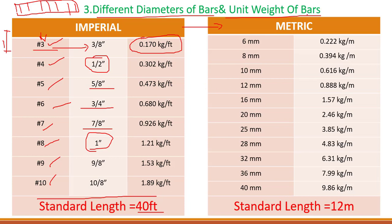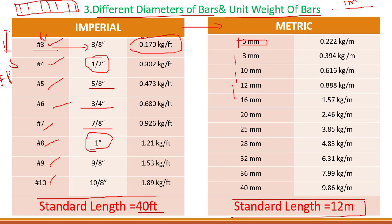Now let's look at the metric system in millimeters. We have bars of 6 mm, 8 mm, 10 mm, 12 mm, 16, 20, 25, 28, 32, 36, and 40 mm. For a 1-meter bar, the unit weights are: 6 mm = 0.22 kg, 8 mm = 0.394 kg, 10 mm = 0.616 kg, 12 mm = 0.88 kg, then 1.57, 2.46 and so on. The main unit used here is FPS (feet and inches). The standard length in feet is 40 feet and the standard length in meters is 12 meters for one bar.